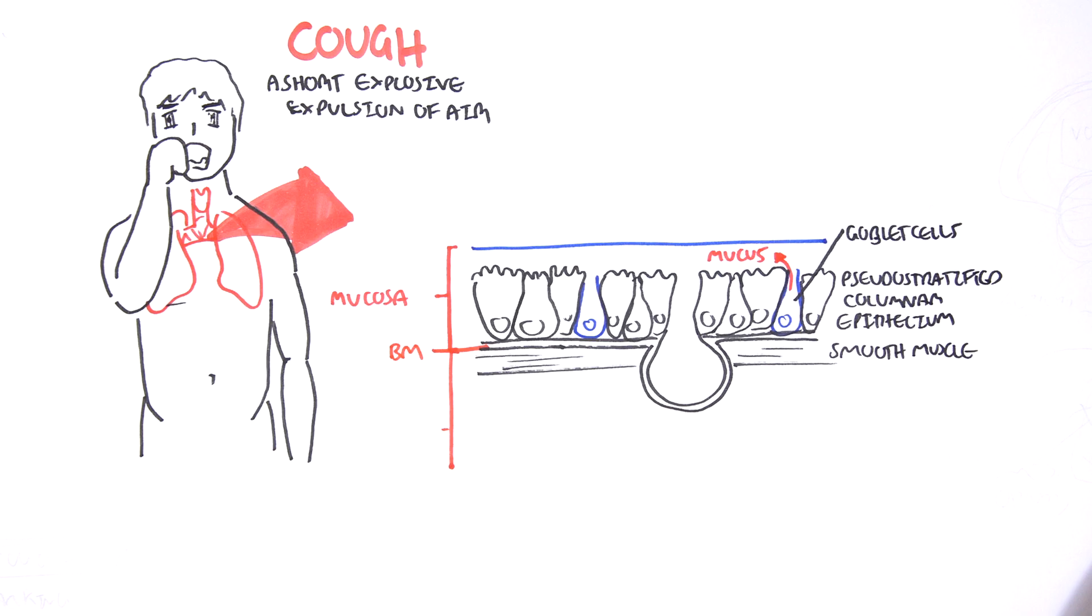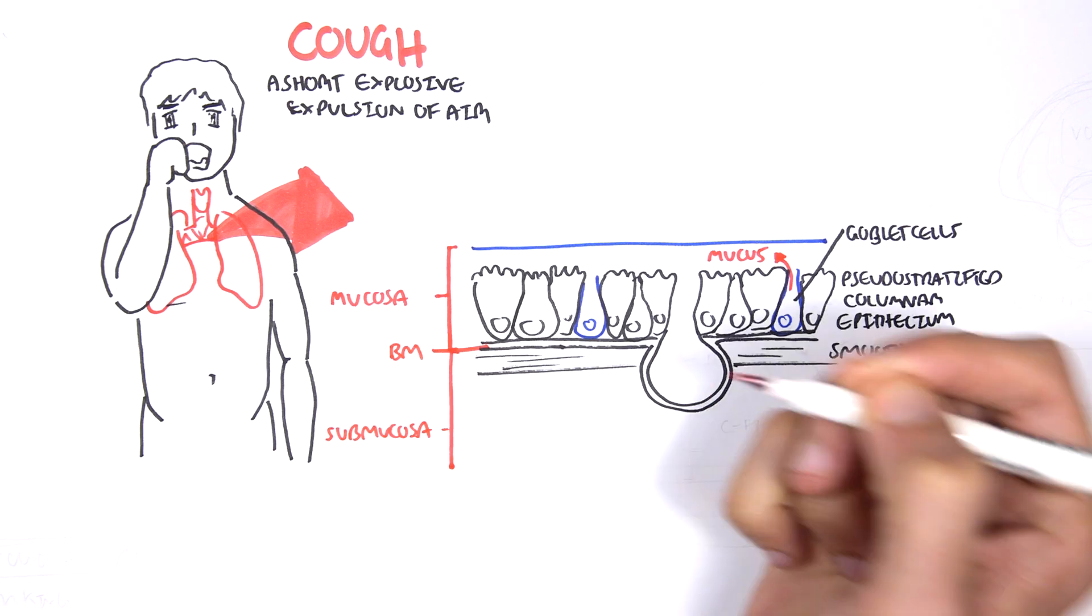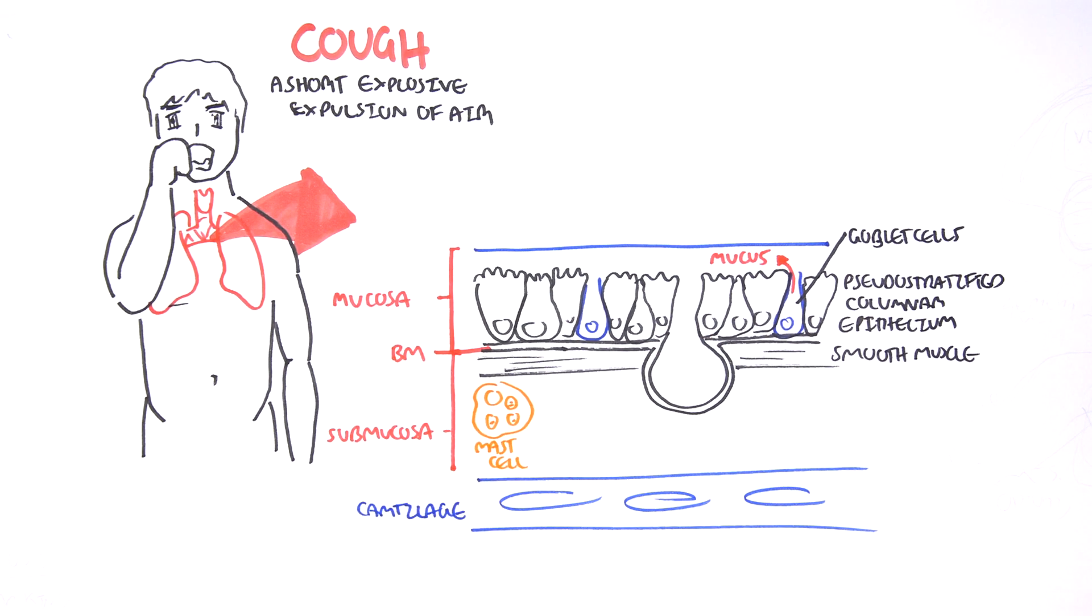Below the mucosa is the submucosa, which contains immune cells, such as mast cells, which are important in defense as well as the allergic response. Below the submucosa, we have cartilage, which I have drawn because the cartilage makes up the trachea.